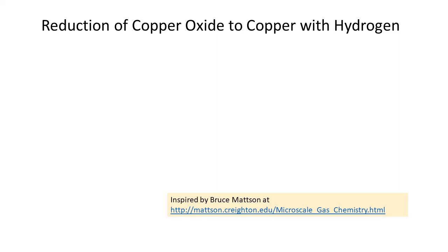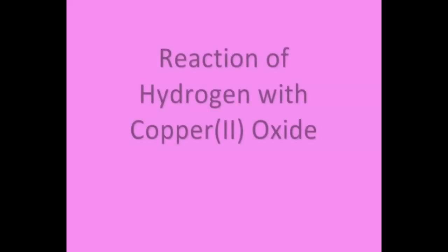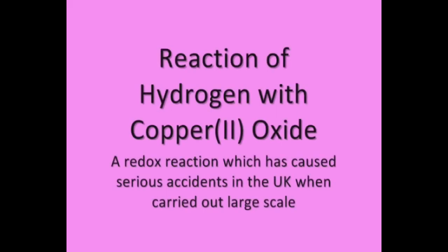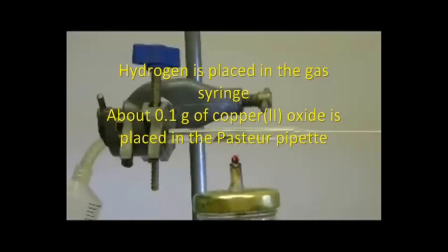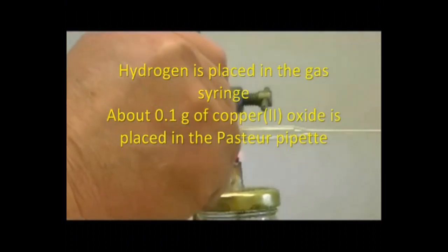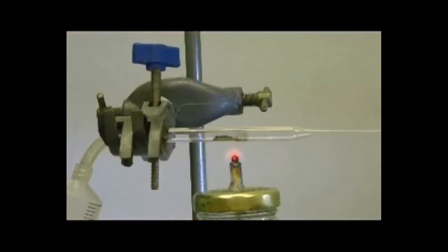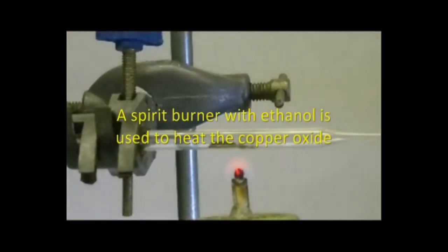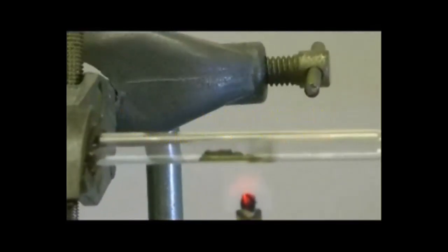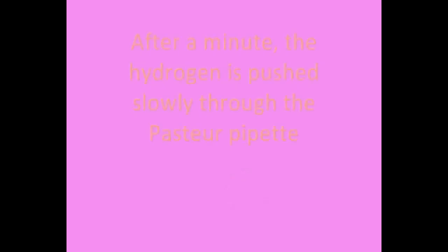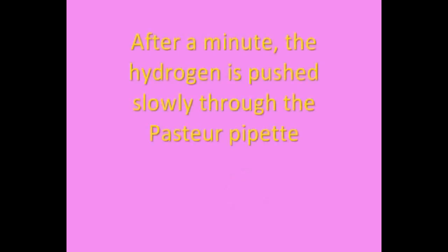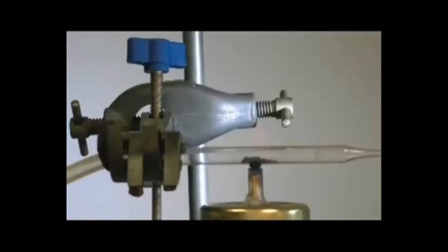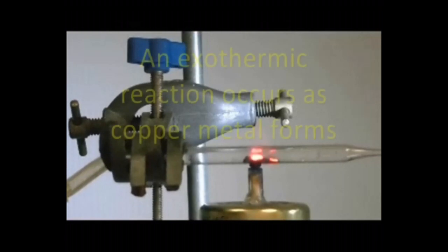I then found inspiration from the Bruce Mattson website on Microscale Gas Chemistry and I adapted the experiment. Bruce worked with syringes and in this experiment we filled a 60 ml plastic syringe with hydrogen and connected it to a Pasteur pipette. These are made of soda glass so you can only heat with a spirit burner — one of my jam jar spirit burners — to heat the copper oxide up. You can then remove the flame and pass the hydrogen over the copper oxide for the first time.